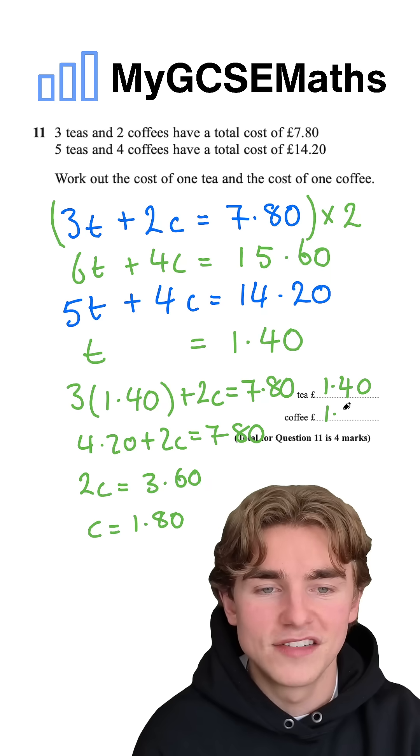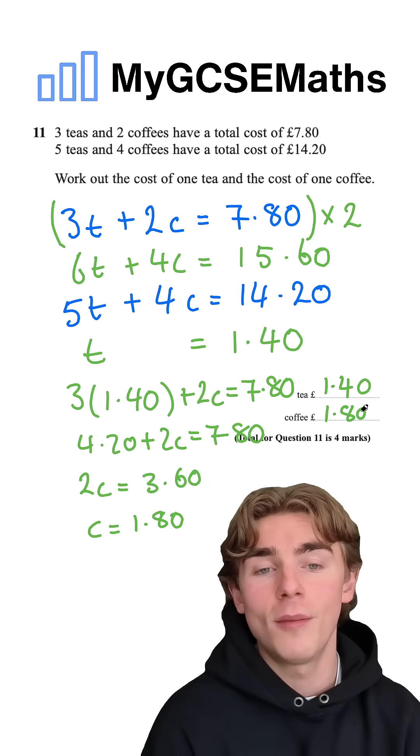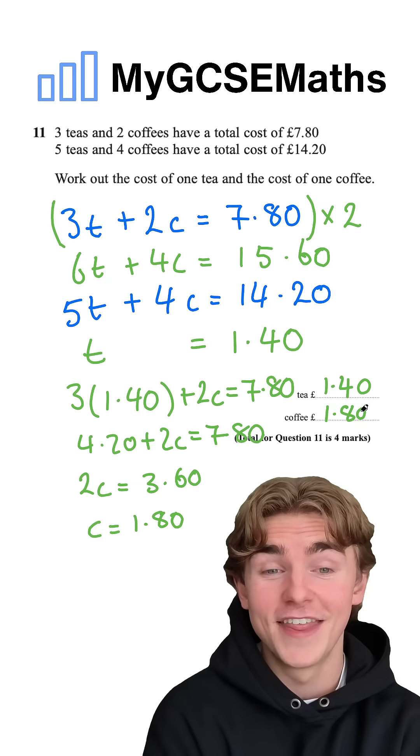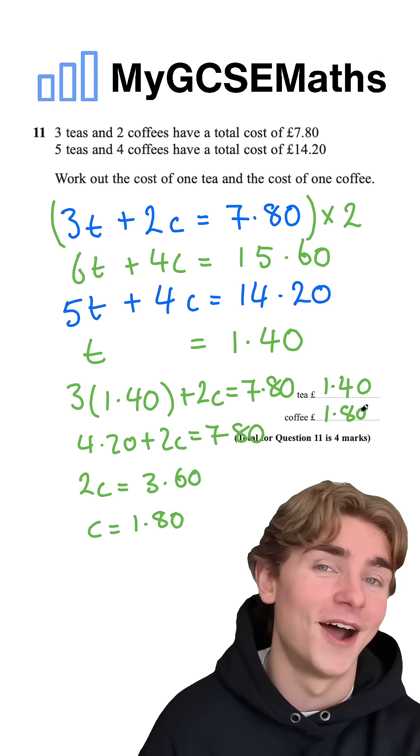And this gives us our answer to this question. A cup of tea is one pound 40 and a cup of coffee is one pound 80. To be honest, that coffee sounds like a bargain. It's making me want to go and get one now.